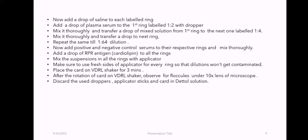Add positive and negative control serums to their respective rings and mix thoroughly. Add a drop of RPR antigen to all rings and mix the suspensions with an applicator stick, using a fresh side for every ring to avoid contamination. Place the card on the VDRL shaker for 3 minutes. After rotation, observe for floccules under the 10x lens of a microscope. Discard used droppers, applicator sticks, and the card in Dettol solution.